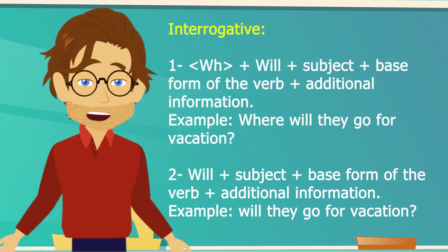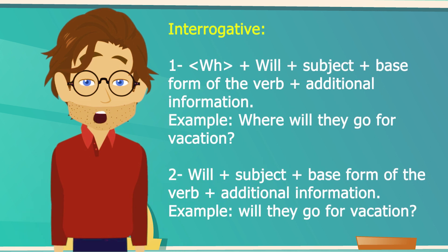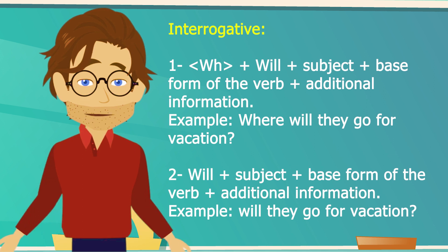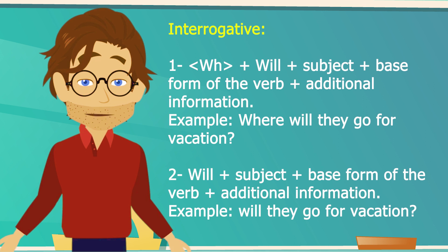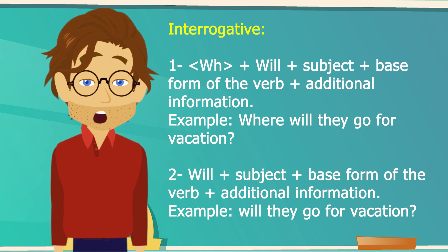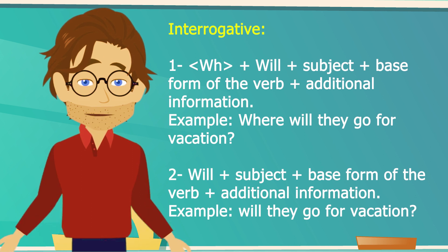Interrogative has two forms. First one: WH words plus will plus subject plus base form of the verb plus additional information. Example: Where will they go for vacation? And second has no WH words.